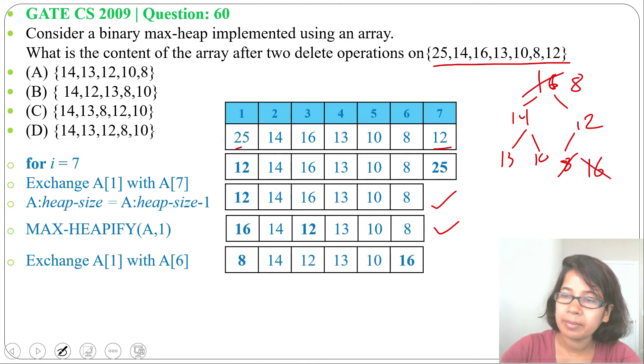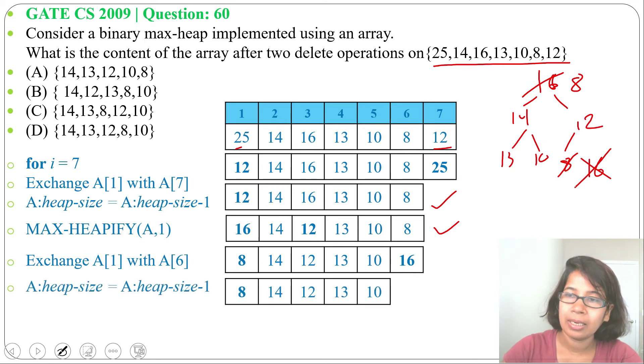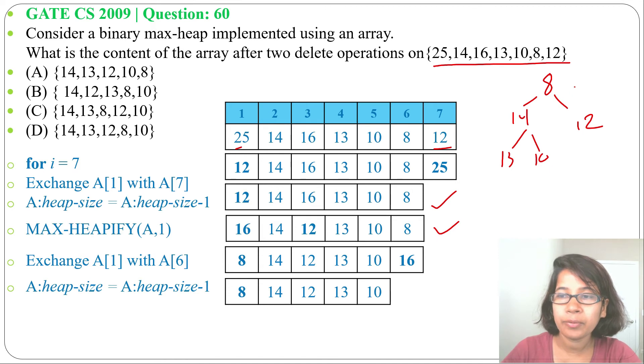Next we'll decrease the heap size, means we'll delete 16. After deletion we got this array. So we'll do maxify of root. 8's children are 14 and 12. So which one is the largest? 14 is the largest, that will swap.